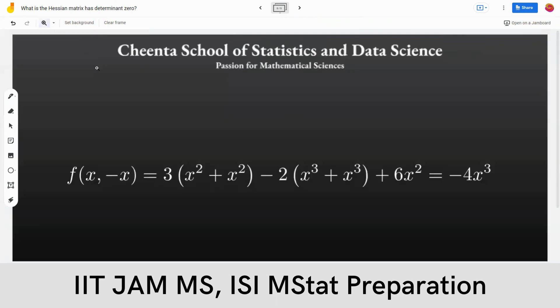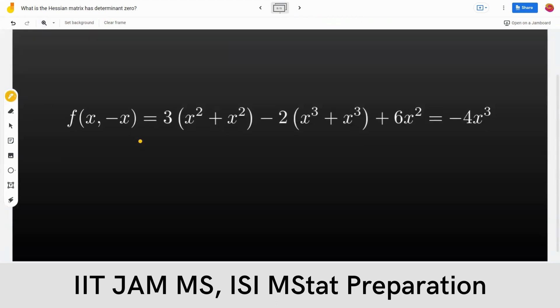So if you take this corresponding path, y equals minus x, that means this is the x, y plane. If you check along this line, the functional value turns out to be minus x cubed minus 4x cubed.